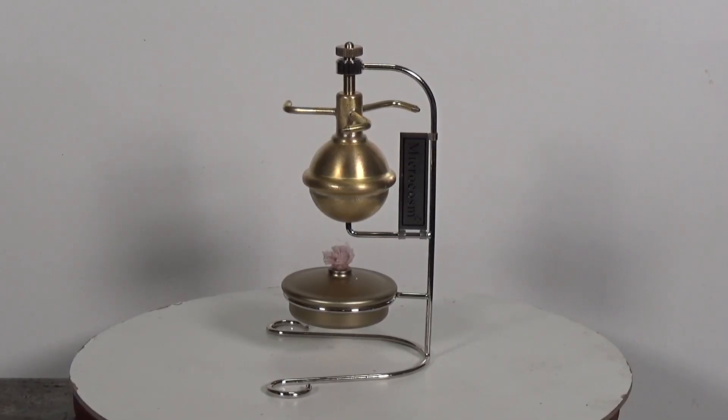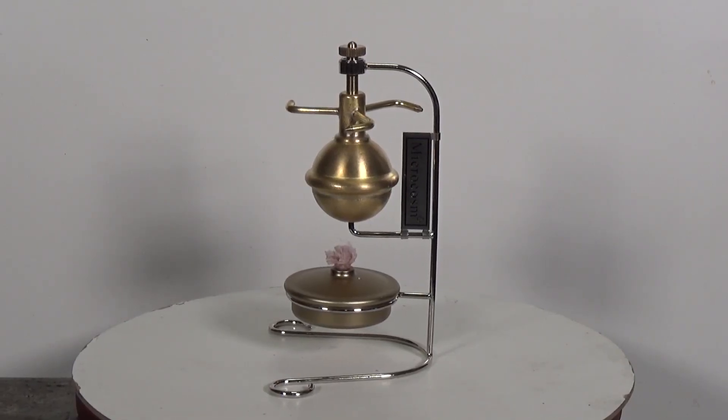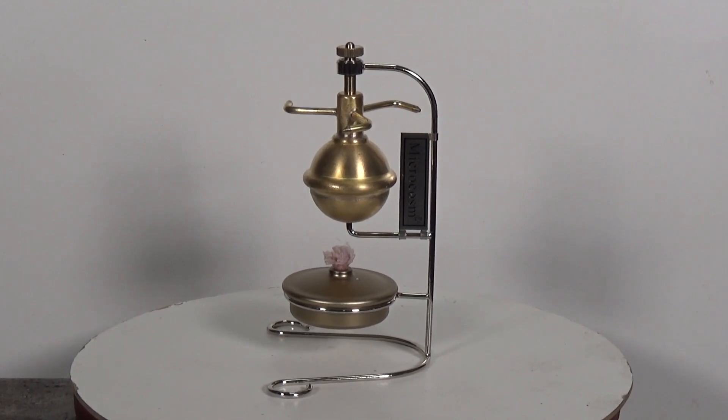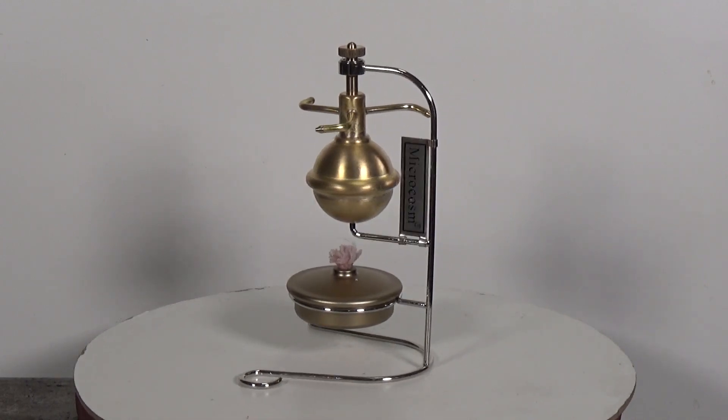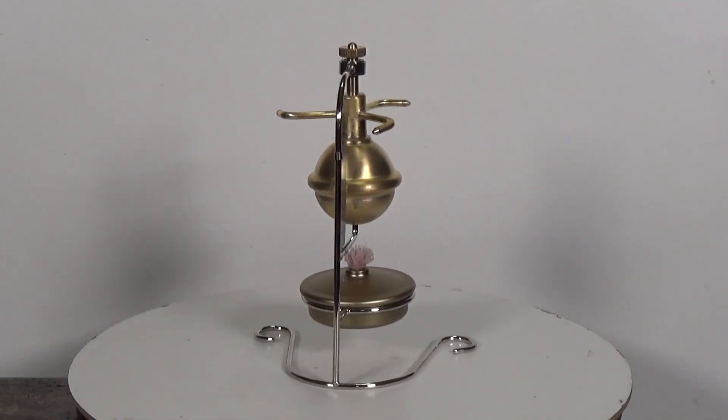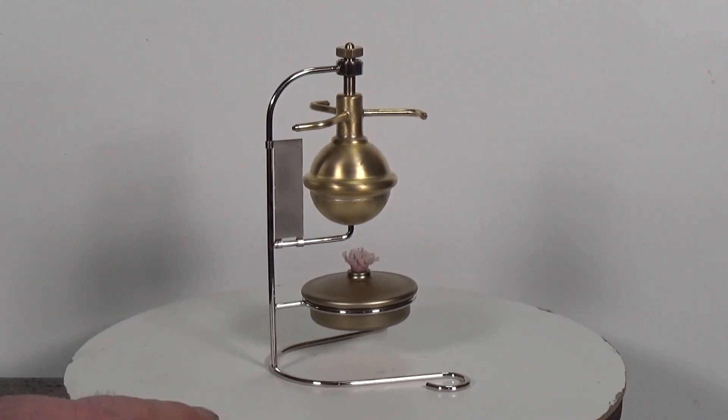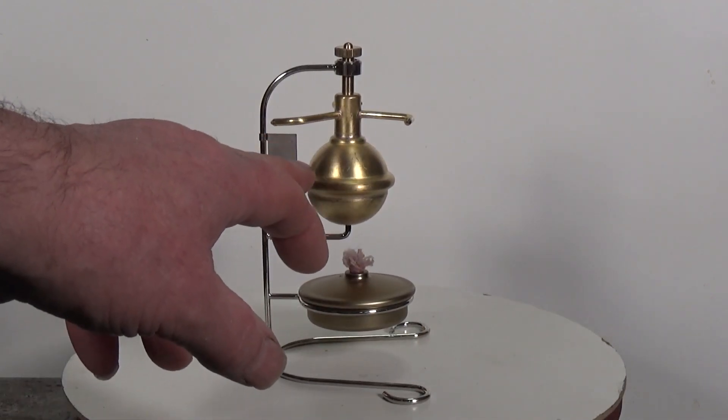Well, here's something a little bit different. This is a model of one of the earliest documented types of steam engines. I think they were called aeolipile or Hero's engine, because Hero of Alexandria documented these around 1 AD. It's very basic. There's some water in the sphere here.